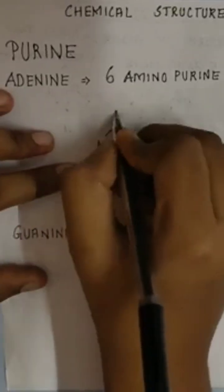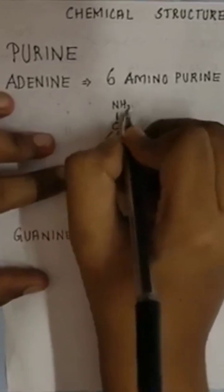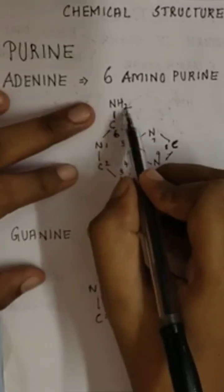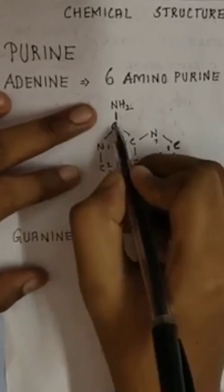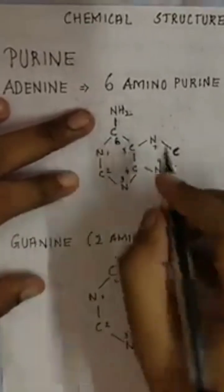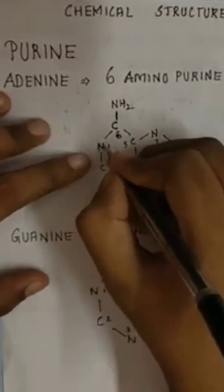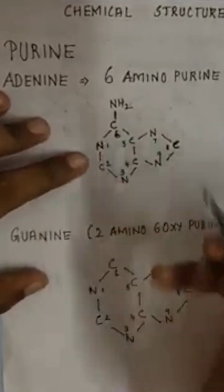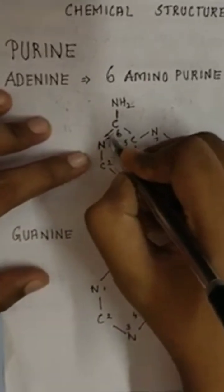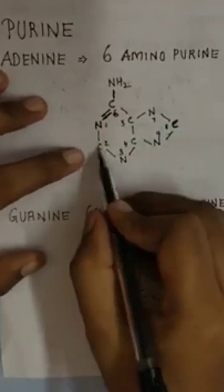At this carbon, the amino group will be added — that is NH2. Nitrogen has 3 valence, so 2 hydrogens and 1 carbon bond. Carbon has 4 valence: 1, 2, 3 — we need another bond. Nitrogen has 3 valency: 1, 2 — we need another bond, so for these two we will add another bond here.